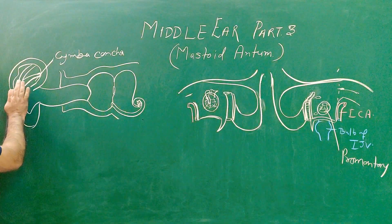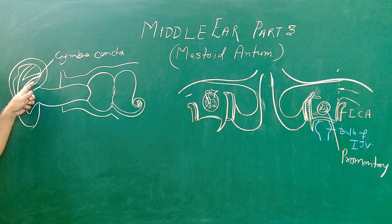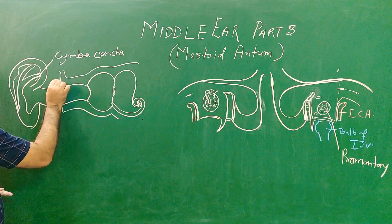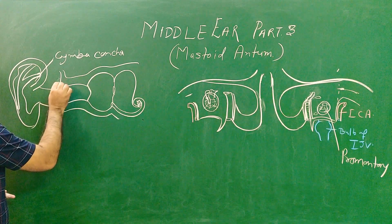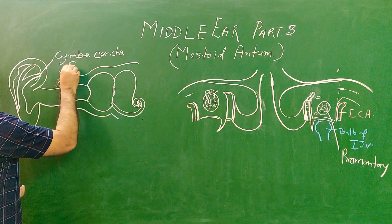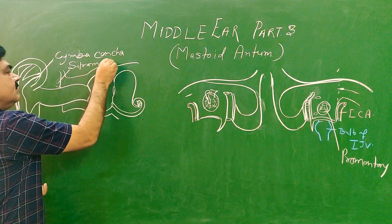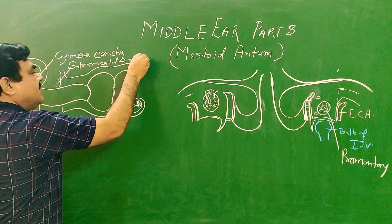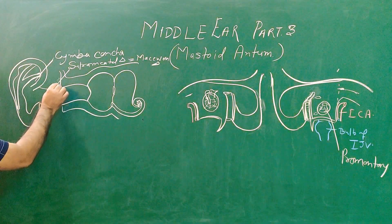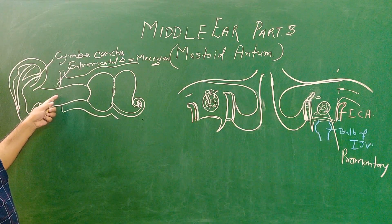At this level it corresponds to the outer surface of the bone. Here lies the supra-meatal triangle. This is the air-containing region, this is the external auditory meatus, and this is the middle ear.